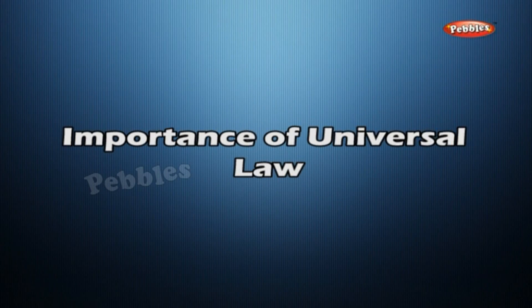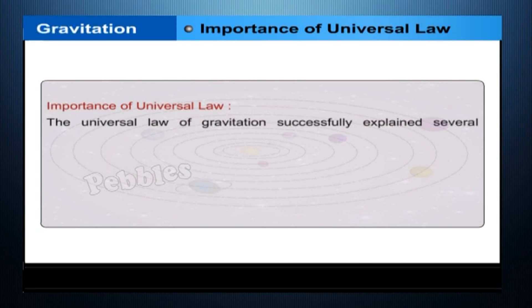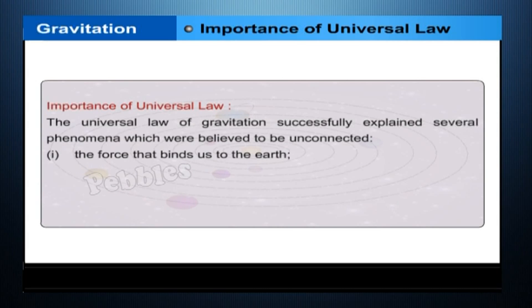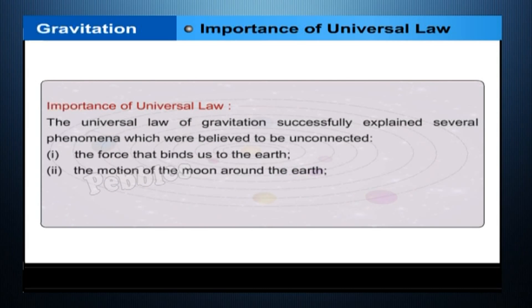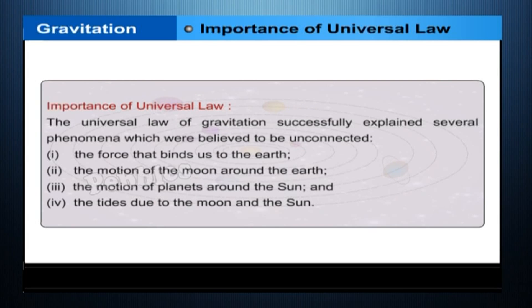Importance of the universal law: the universal law of gravitation successfully explained several phenomena which were believed to be unconnected — one, the force that binds us to the earth; two, the motion of the moon around the earth; three, the motion of planets around the sun; and four, the tides due to the moon and the sun.